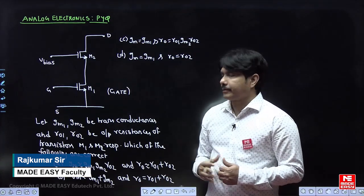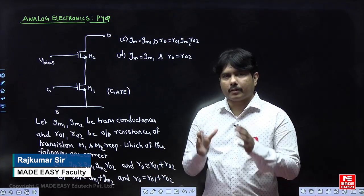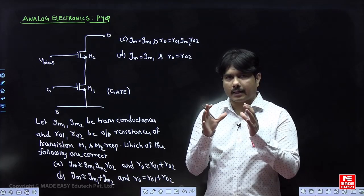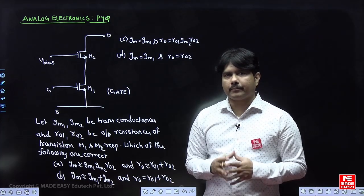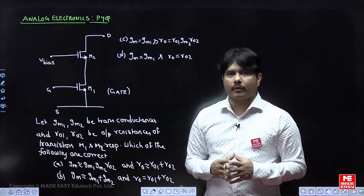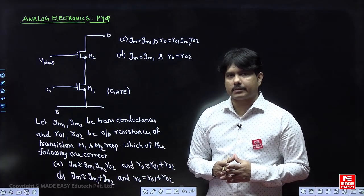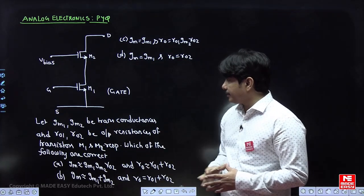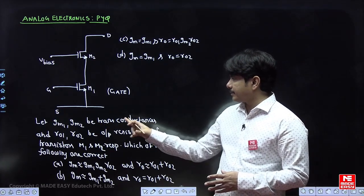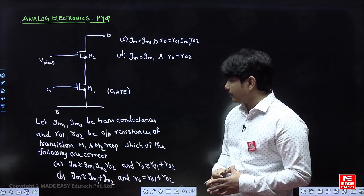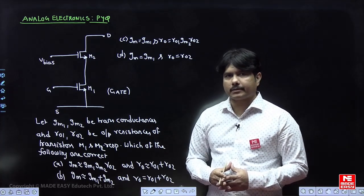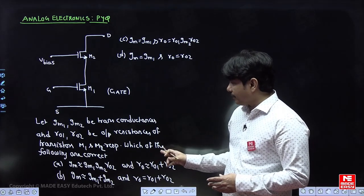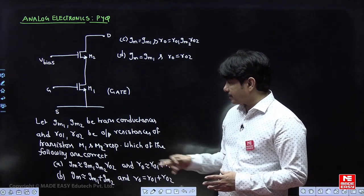If you observe this diagram on the board, there are two transistors given: M1 above M2. First we will understand what type of configurations M1 and M2 have been developed in the design. They have given some extra information here: let GM1, GM2 be the transconductance and R01, R02 be the output resistance of transistors M1 and M2. Which of the following statements are correct?